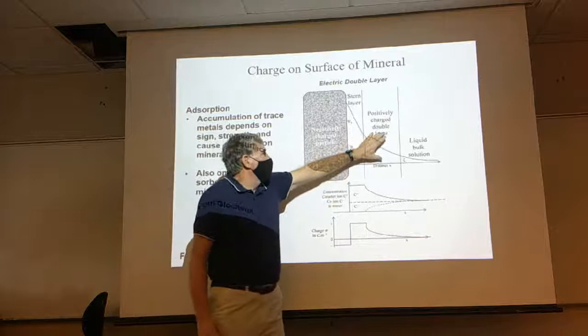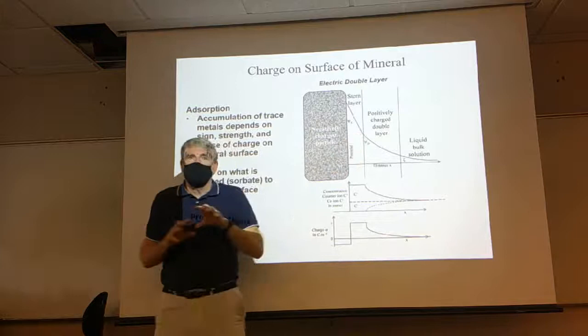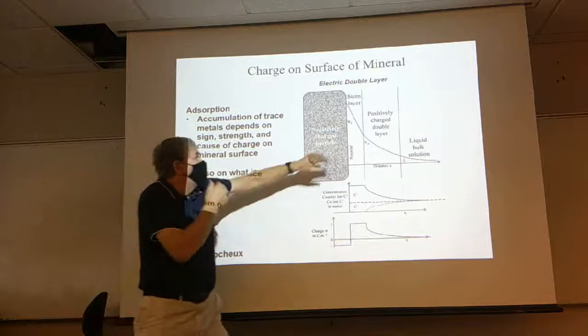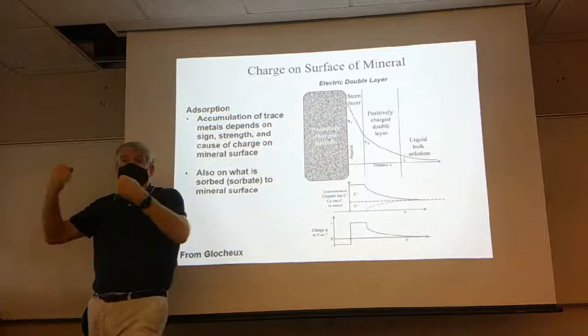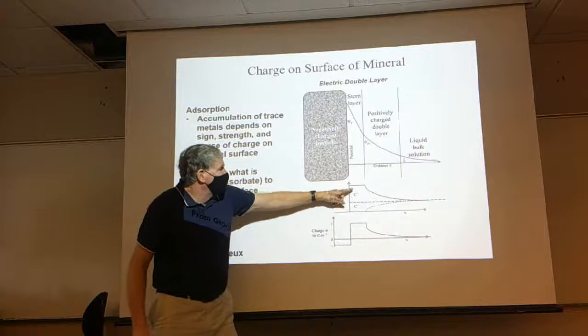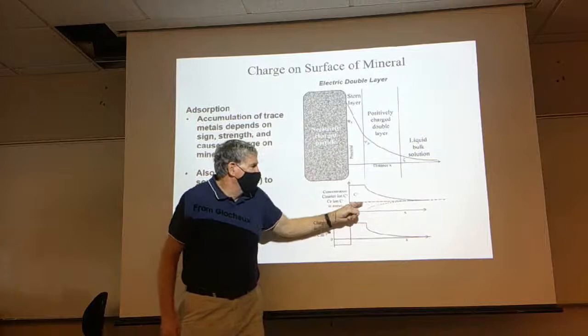We have this layer with really high charge called the Stern layer, and then further away we have this diffuse double layer with less charge. In nature we always want to balance charge — a positive charge with a negative and vice versa. So if this is a negative charge, it's going to attract positively charged ions to try to cancel each other out.